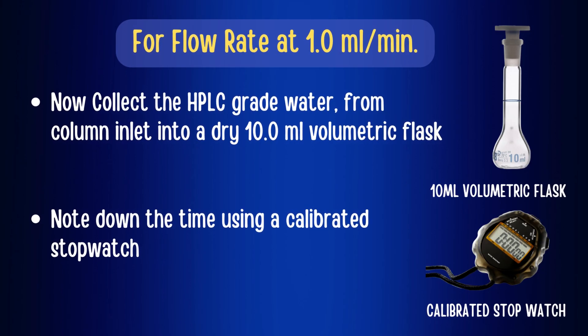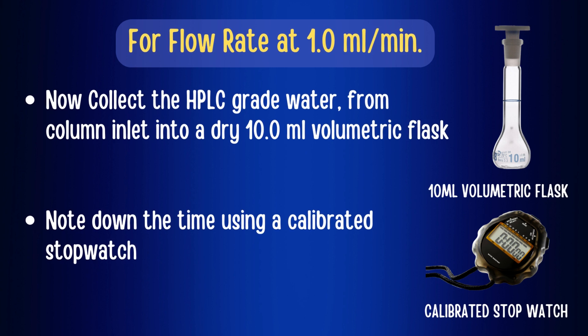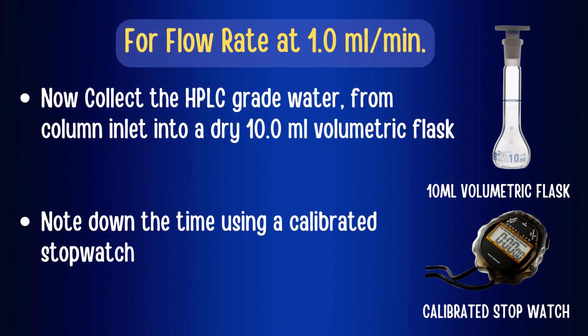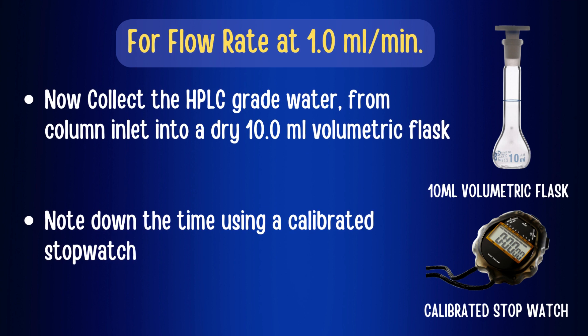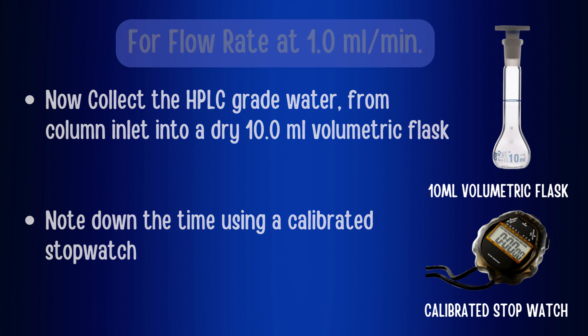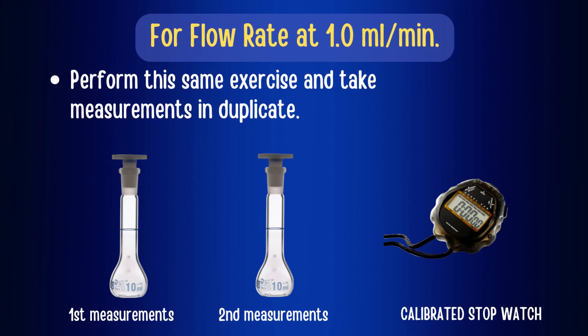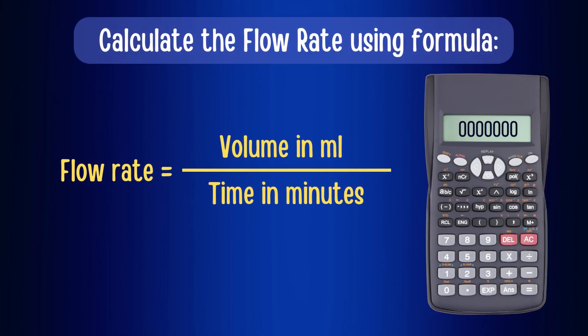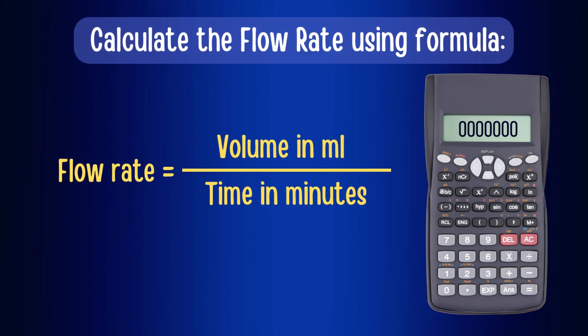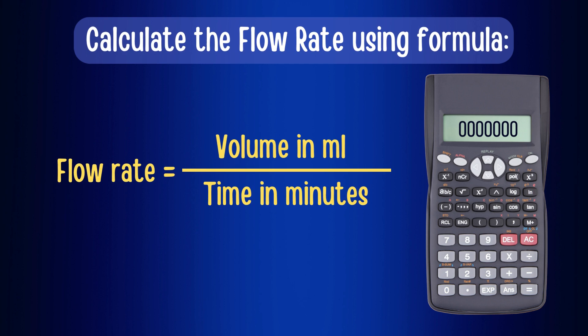Now, collect the HPLC grade water from the column inlet into a dry 10 ml volumetric flask and note down the time using a calibrated stopwatch required to fill the volumetric flask till the mark or lower meniscus of the flask. Perform the same exercise and take measurements in duplicate. Then calculate the flow rate using the formula: flow rate equals volume in ml divided by time in minutes.